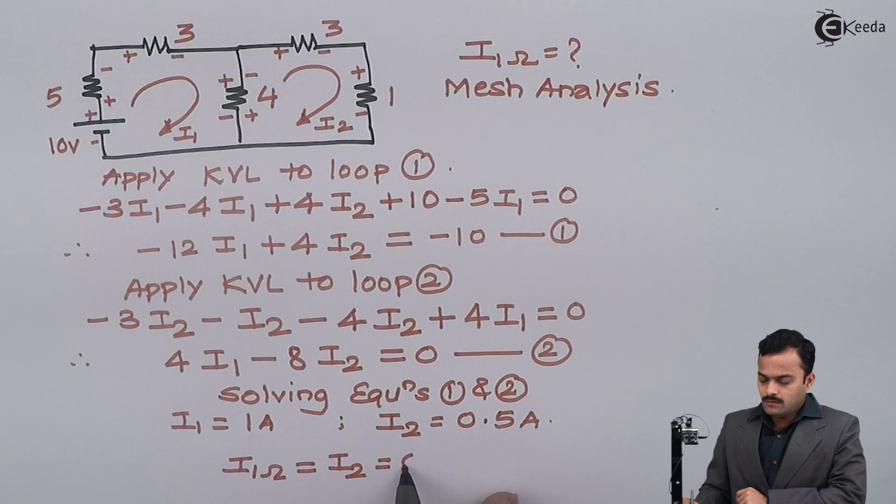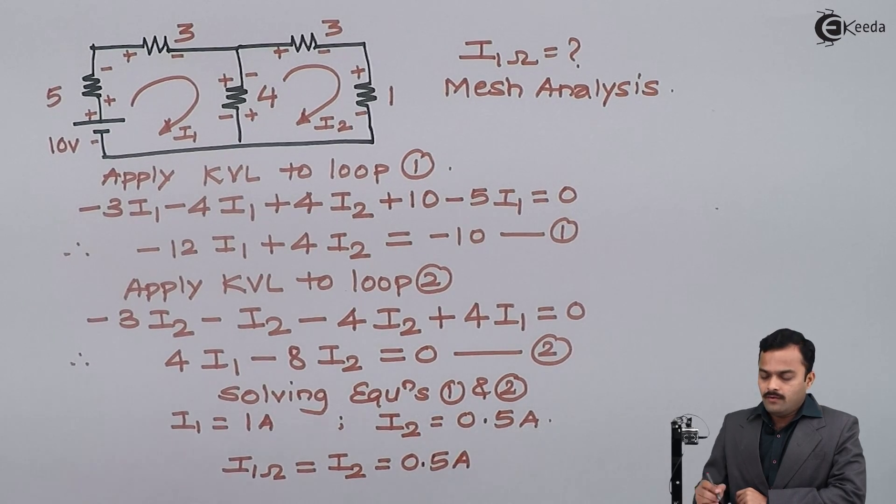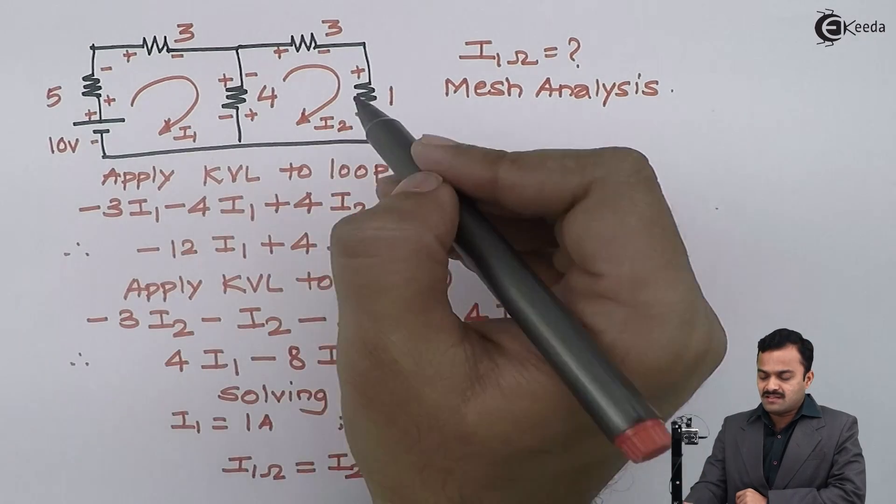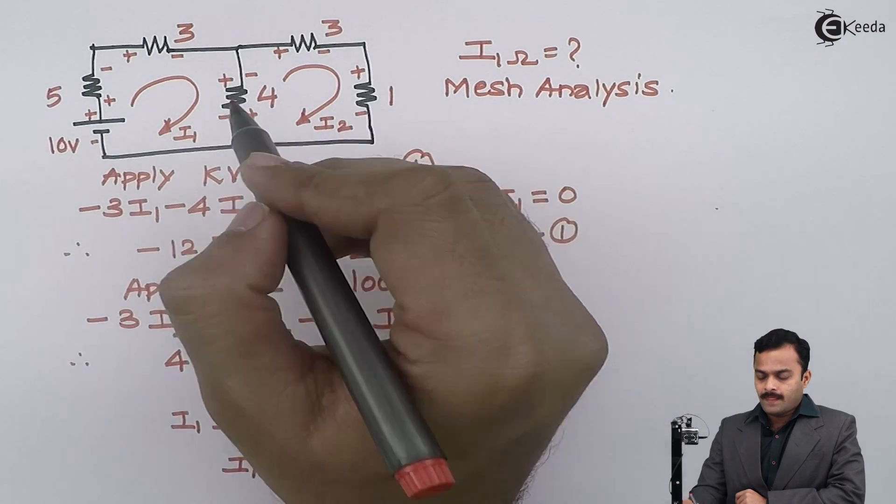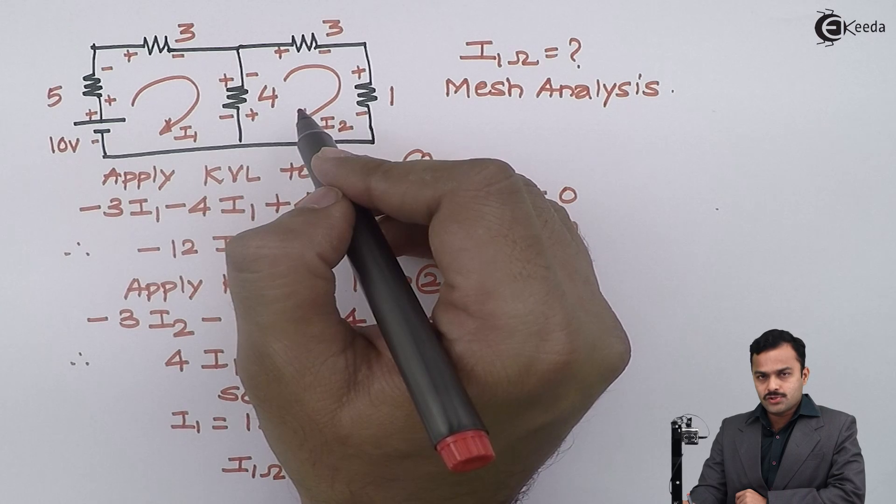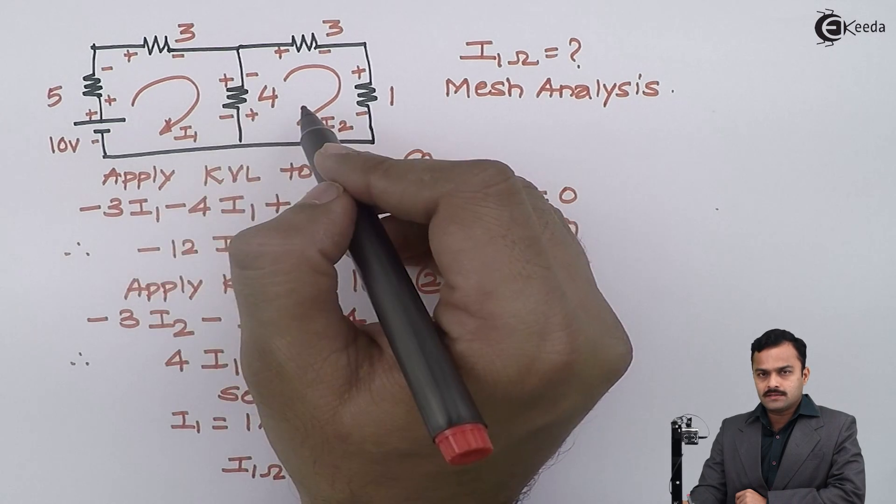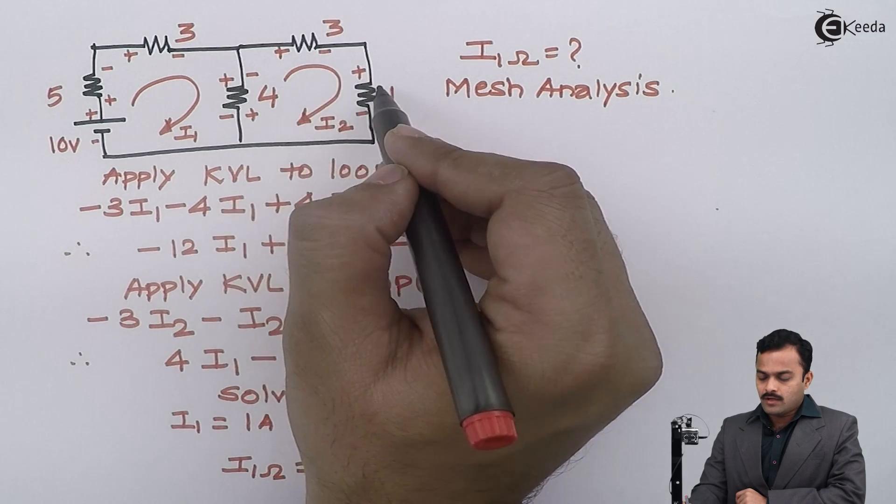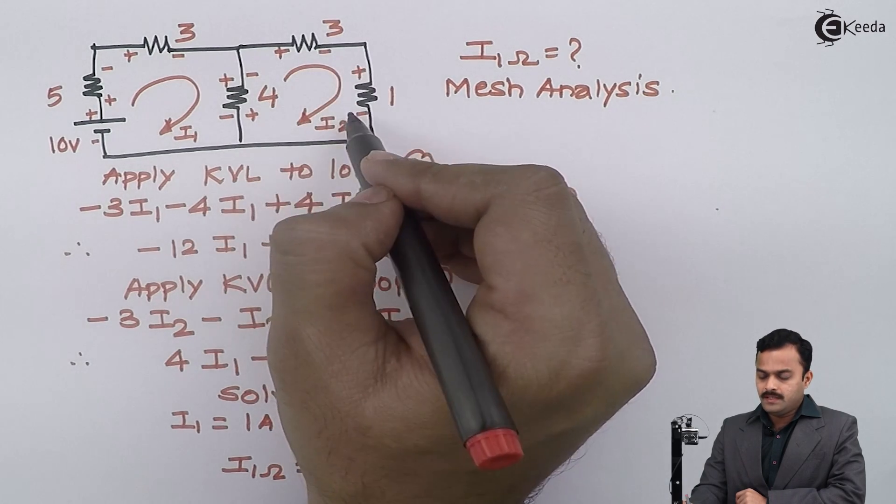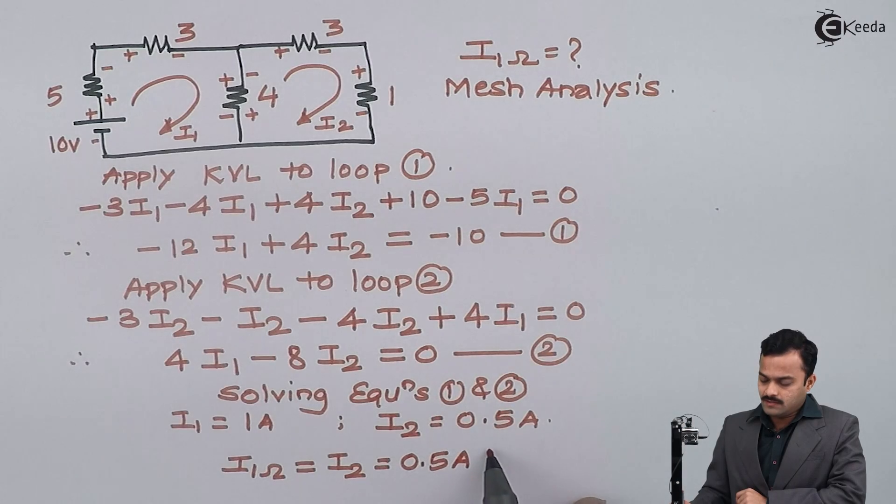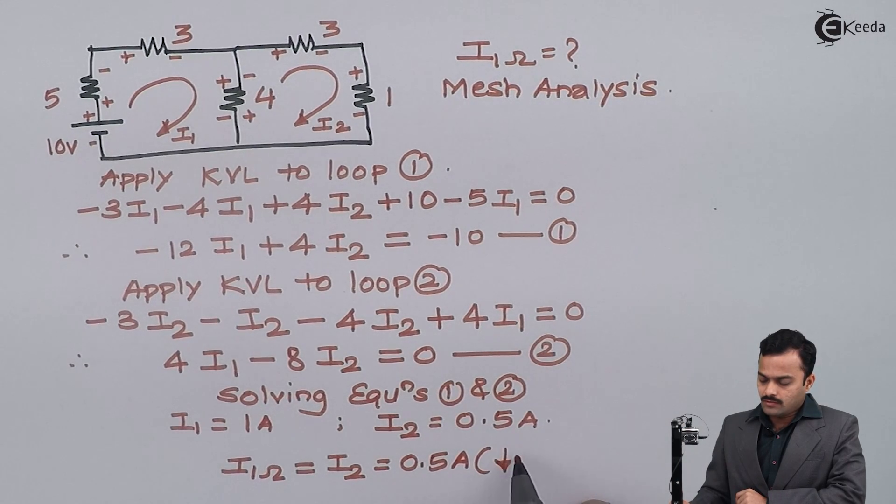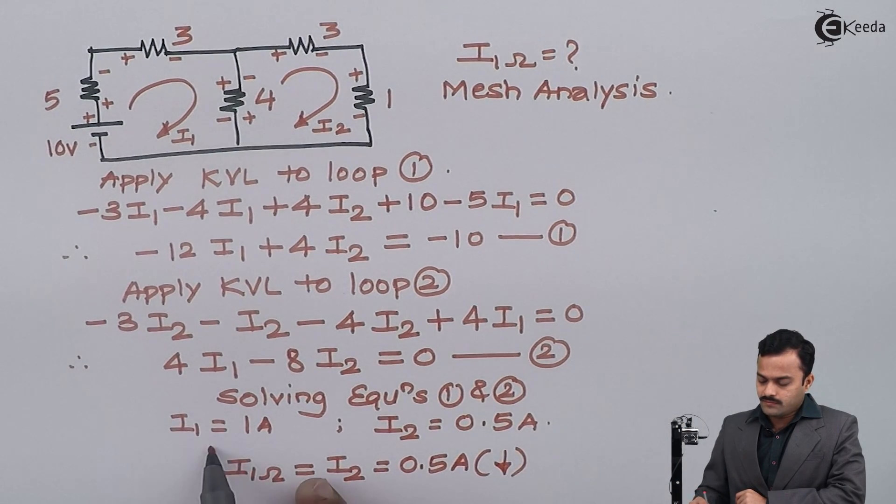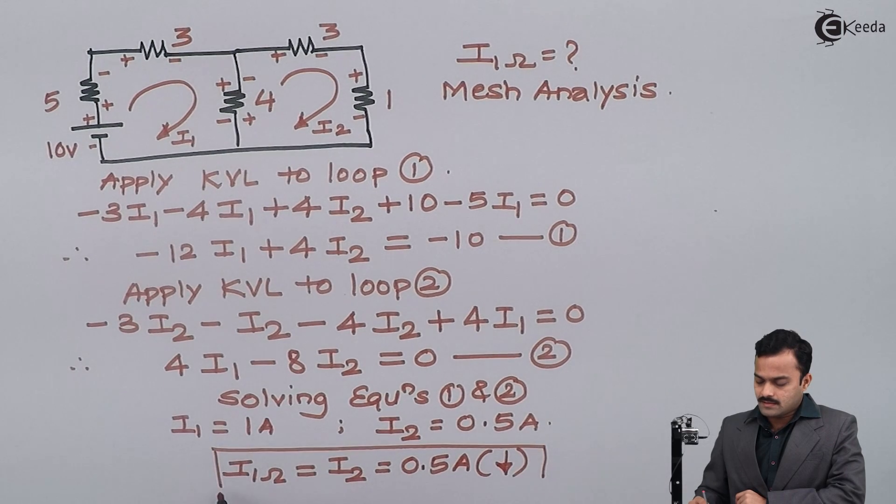Now I am getting a positive value of this current I2, that means whatever direction I have assumed for these loop currents are correct, meaning for this 1 ohm I2 will be downward. So I will mention direction of current along with the magnitude, so this will be your complete answer.